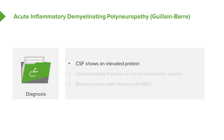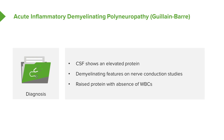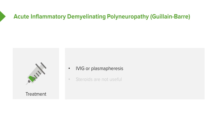To diagnose Guillain-Barré: CSF shows elevated protein, which is nonspecific. Demyelinating features mean your nerve conduction test will come back abnormal — also not specific, as you'd find that with ALS as well. Raised protein with absence of WBCs. Clinical history is the most important component: Was there a prior infection? Ascending paralysis? Respiratory compromise? Management is IVIG or plasmapheresis. Steroids are not at all useful in acute inflammatory demyelinating polyneuropathy.